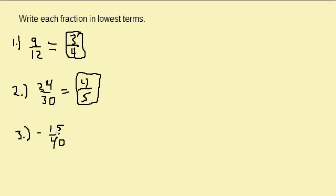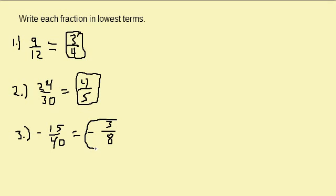What's the largest number that will divide into 15 and 40 evenly? Well, that would be 5. And notice we have a negative out here, so the negative comes with us. 5 goes into 15 three times, 5 goes into 40 eight times. So our final answer would be negative 3 eighths.